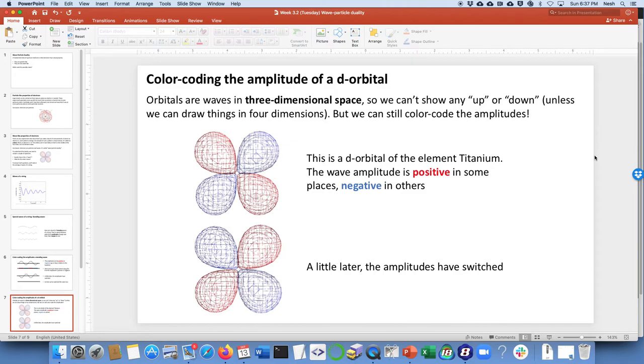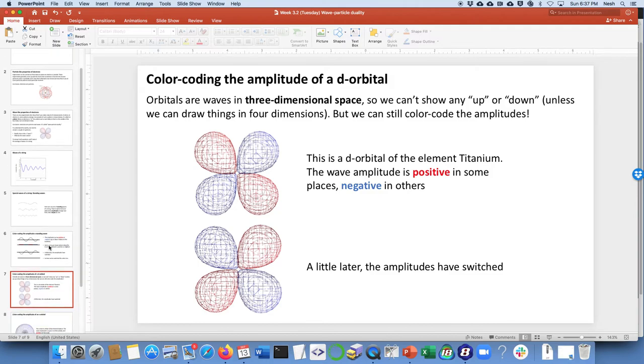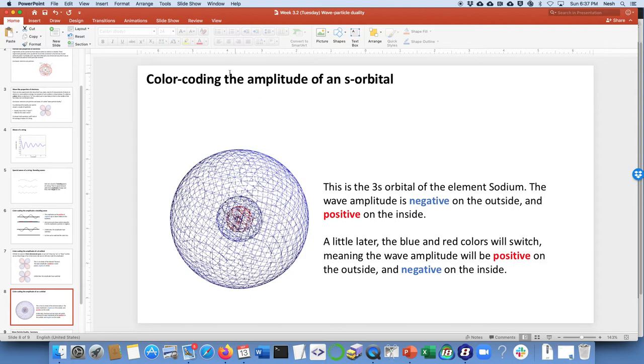The amplitude of the wave must be negative there and positive and negative. This happens to be a d-orbital of titanium. If I waited a little bit, probably the positive amplitude over here in this region of space would become a negative amplitude. So that's why it's blue.